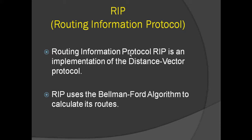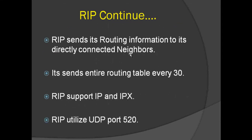RIP sends its entire routing information to its closest neighbor. The main disadvantage of RIP is that it sends the entire routing table every 30 seconds, which may put a heavy amount of extra traffic on the network.